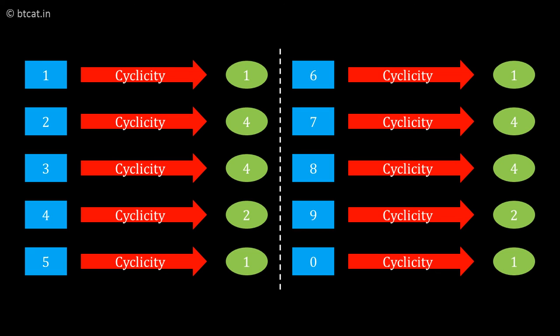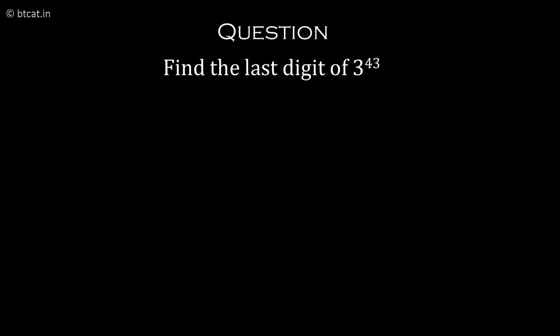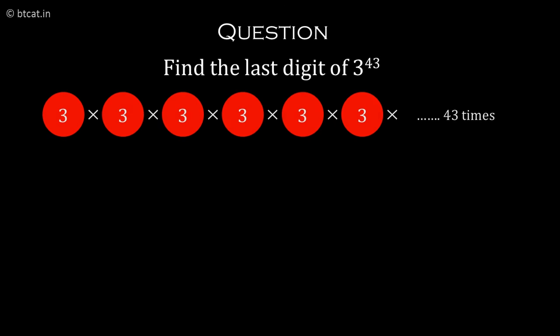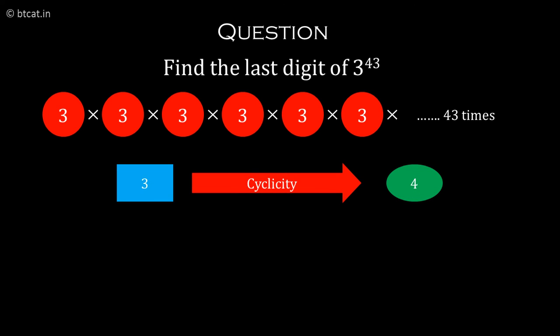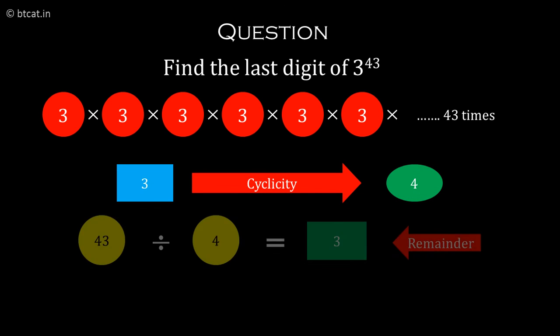Once we understand cyclicity, we can find the last digit of any number raised to any power. For example, find the last digit when 3 is raised to 43. The cyclicity of 3 is 4, so we divide 43 by 4 and get remainder 3.